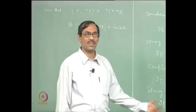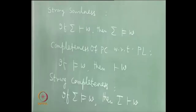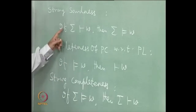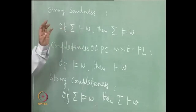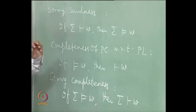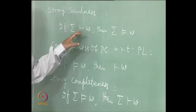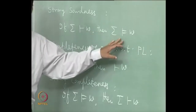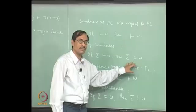That means: let sigma be a set of propositions and w be a proposition. Suppose that sigma entails w as a proof. Then, how are you going to prove that sigma entails w in PL?